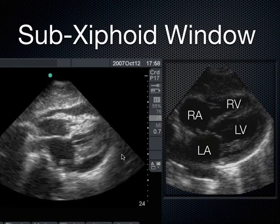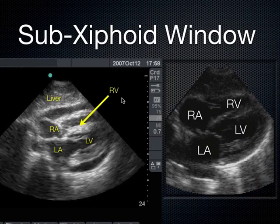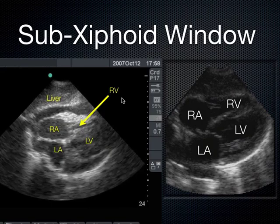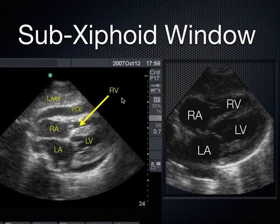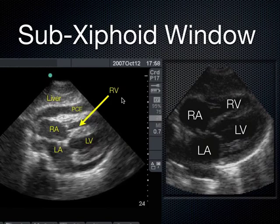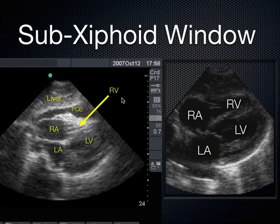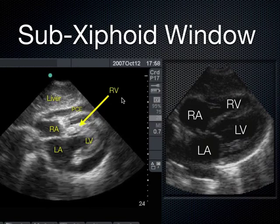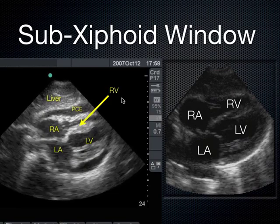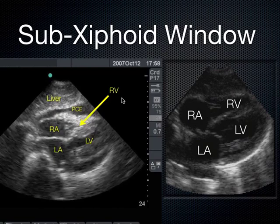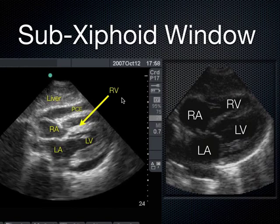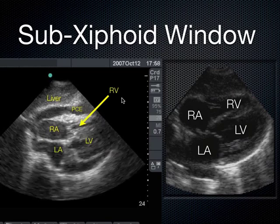I tend to find more pericardial effusions in the subxiphoid view than in other views. The heart is heavy and hangs in its posterior pericardium, pushing fluid anteriorly, which makes pericardial effusions easier to see from this approach. In a code, this is the first view I reach for to check contractility and look for effusions. That's why the FAST exam includes two views of the heart — this view and the parasternal long — and we always start with this one.